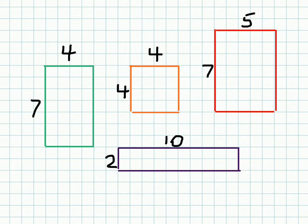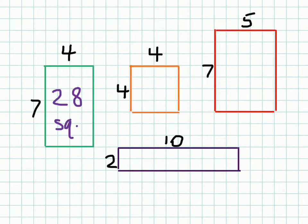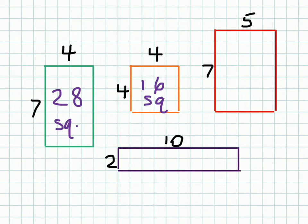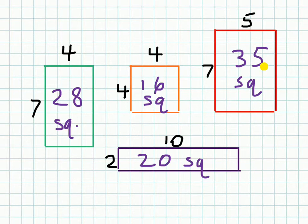So 7 times 4 is going to give us 28 — the unit is squares. And 4 times 4 will give us 16. 2 times 10, 7 times 5 — hopefully you know those. That gives us 20 squares here, and 35 squares. And if you really want to check your work, you can go through and count each of these to see if that answer is right.